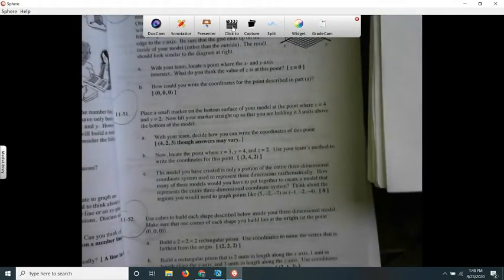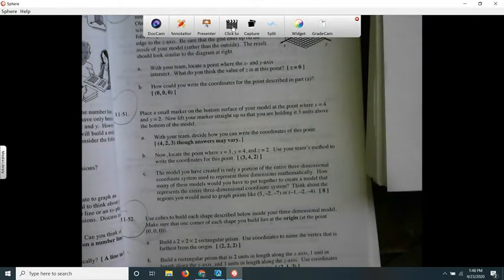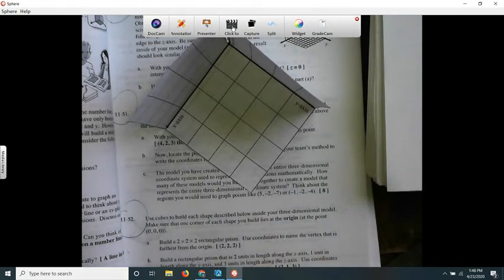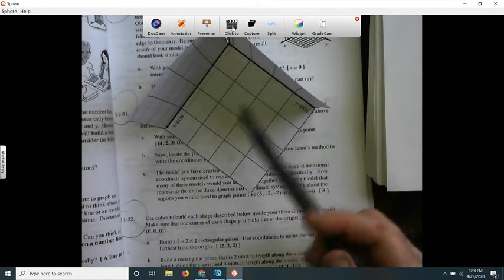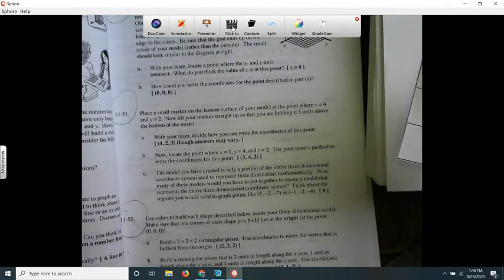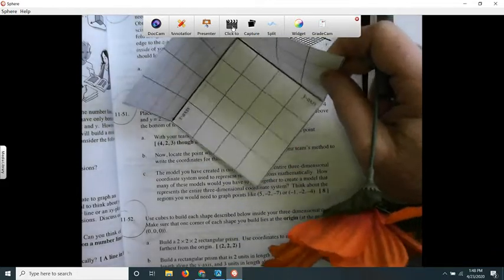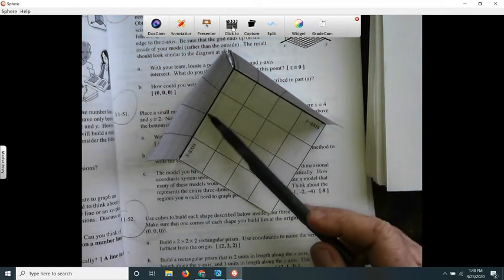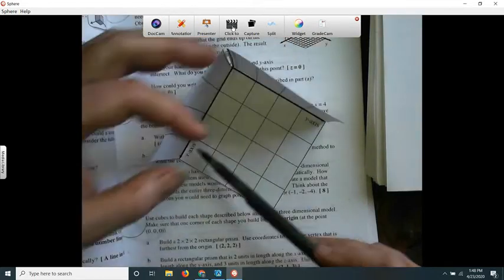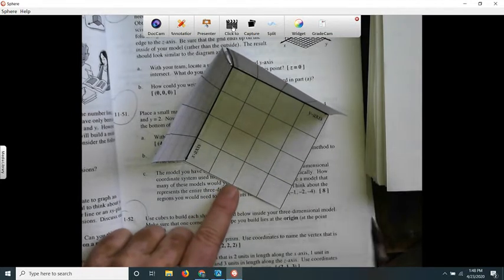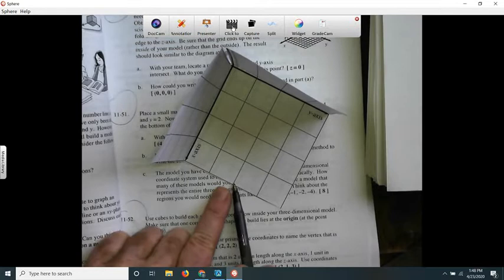1151 says: place a small marker on the bottom surface of your model at the point where X equals four and Y equals two. So by a small marker, they meant like a little block or maybe a little bingo chip or something. 4 and 2. So X is four. Remember, this is the origin. So X is one, two, three, four. And see how this is the Y axis? Y is two. So I would place something right here. I didn't even get anything to place. I'm just going to place the bottom of my pen there.